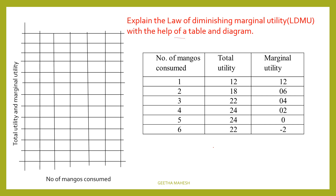Now we can explain the law of diminishing marginal utility with the help of a table. The number of mangoes consumed increases from 1 to 6. When the consumer consumes the first mango, the utility is 12. The second mango gives 6, so total utility for the first two mangoes is 18.